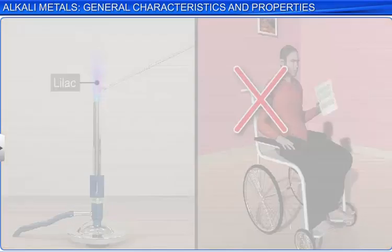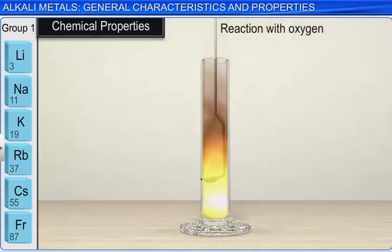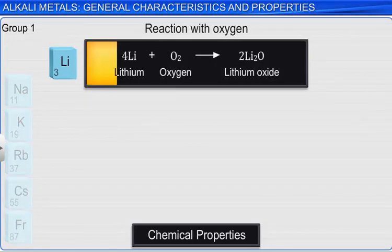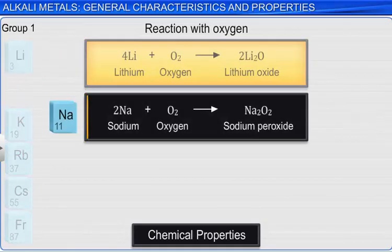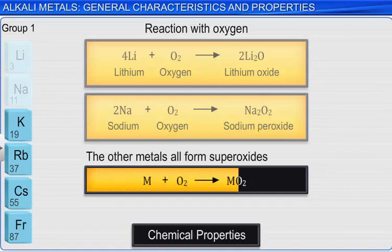Let's discuss some chemical properties of the alkali metals, starting with their reactions with oxygen. They all react vigorously with oxygen. They don't all form the same kinds of oxides though. Lithium reacts with oxygen to form a simple oxide, Li2O. Sodium forms sodium peroxide, Na2O2. The other metals all form superoxides, for example, CsO2.